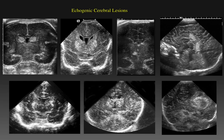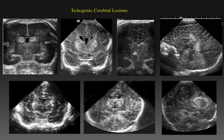We go back to the original seven infants: the lesions include germinal matrix hemorrhage, basal ganglia ischemia, neurocutaneous melanosis, a callosal lipoma, gliosis, diffuse basal ganglia calcification secondary to ischemia, and finally a choroid plexus papilloma or carcinoma. I hope that this talk helped expand the differential diagnosis of echogenic lesions in cranial sonography. Thank you for listening.